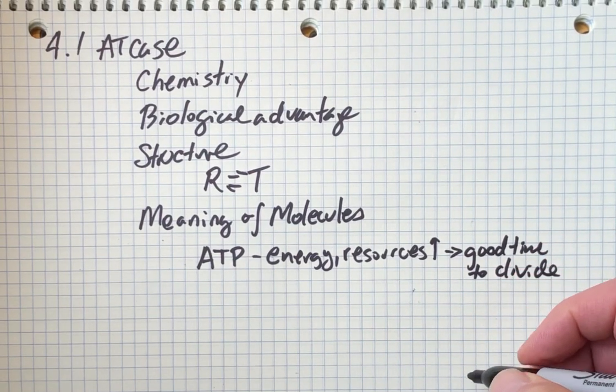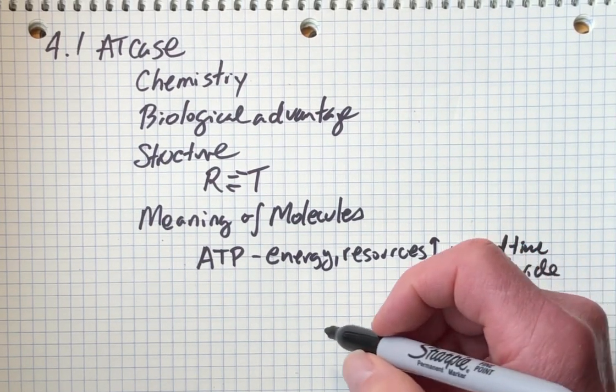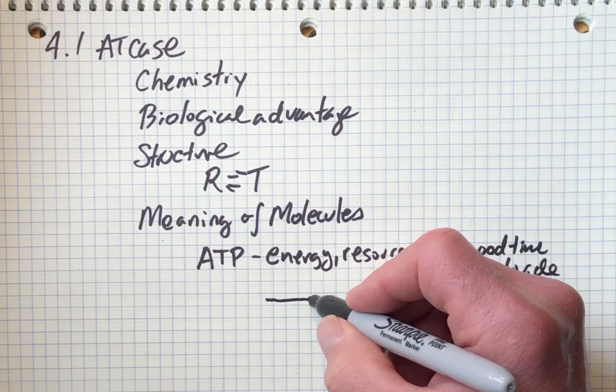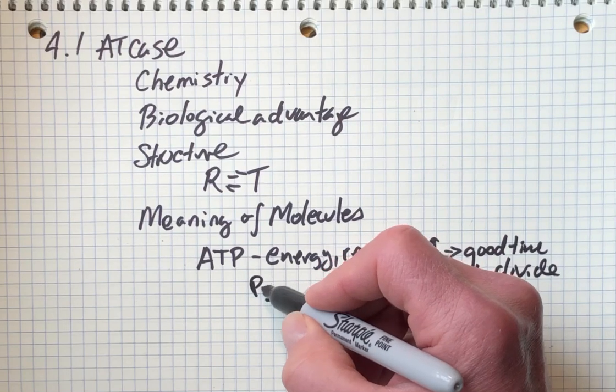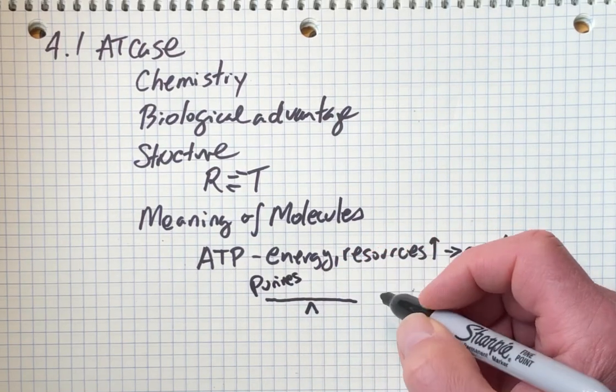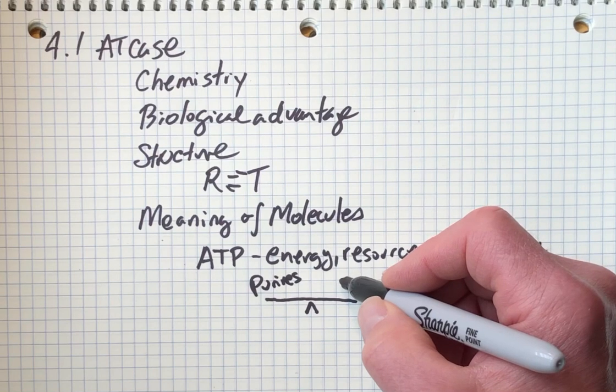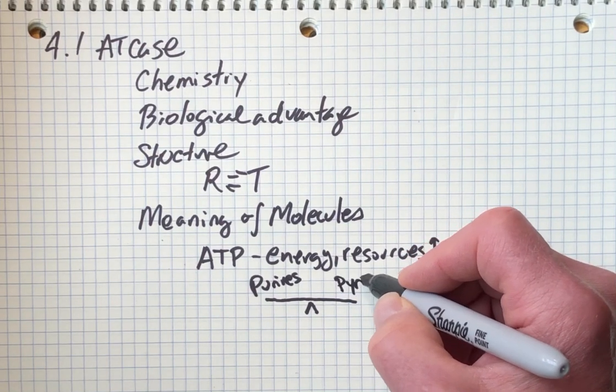And of course, when you're making new cells, you need to make DNA. Another meaning of ATP is that it is one of the purines. If you're going to be making DNA, it's helpful if the purine levels match the pyrimidine levels.